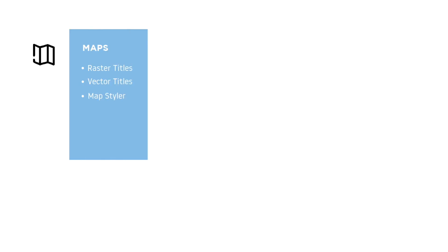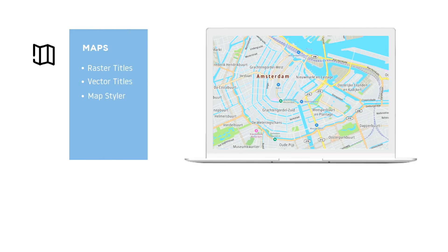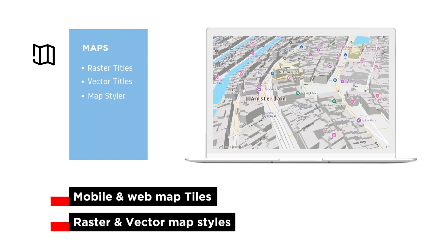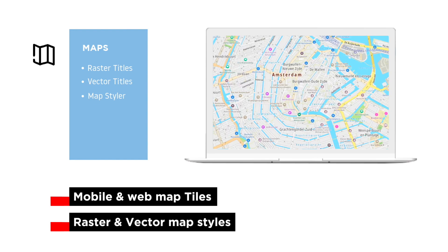First, we have the Maps APIs. These enable static and interactive maps to be displayed in mobile or web applications. Map tiles come in raster or vector format and they can be customized so you can make it your own.